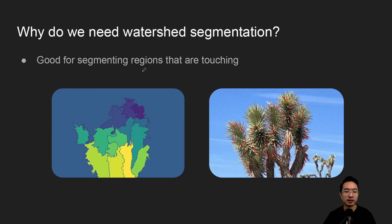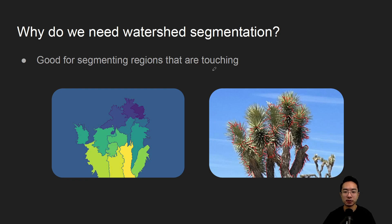So why do we need it? Like we were saying, the objects will be touching. So in this case, like we see here, a bunch of trees — they're very close by, so segmenting this can be tricky. That's where, in some cases, watershed segmentation can be useful.